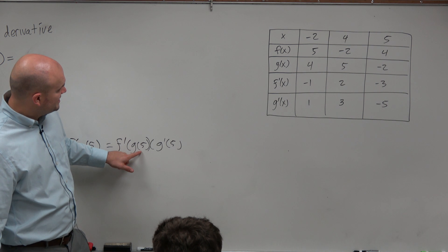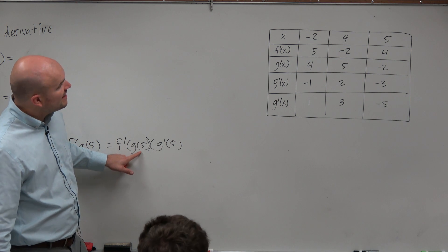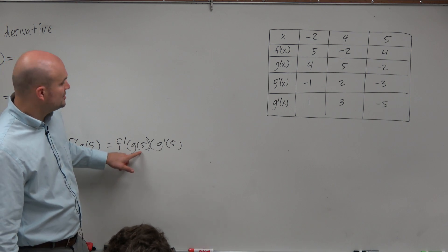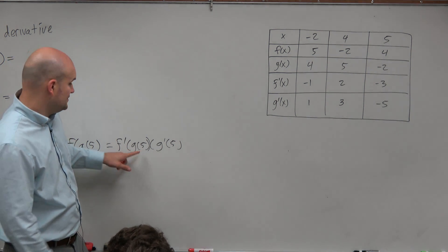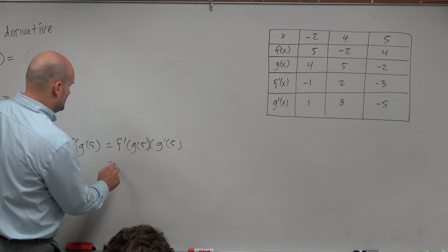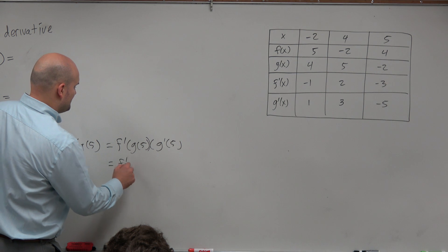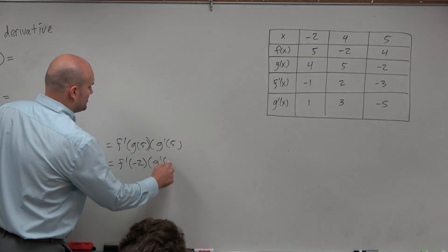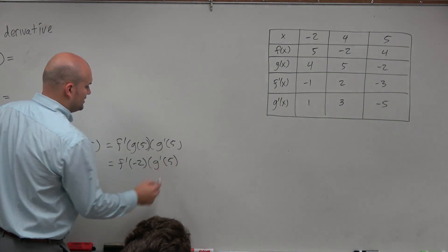In this case, we find what g of 5 is. G of 5 is negative 2. So really, what that is, is f prime of negative 2 times g prime of 5.